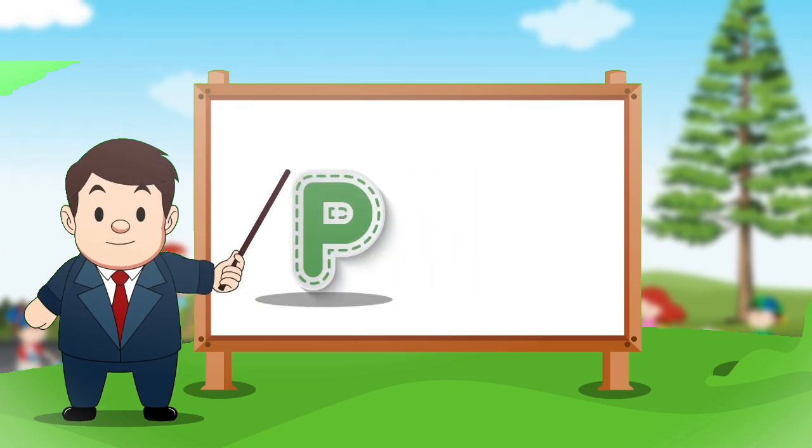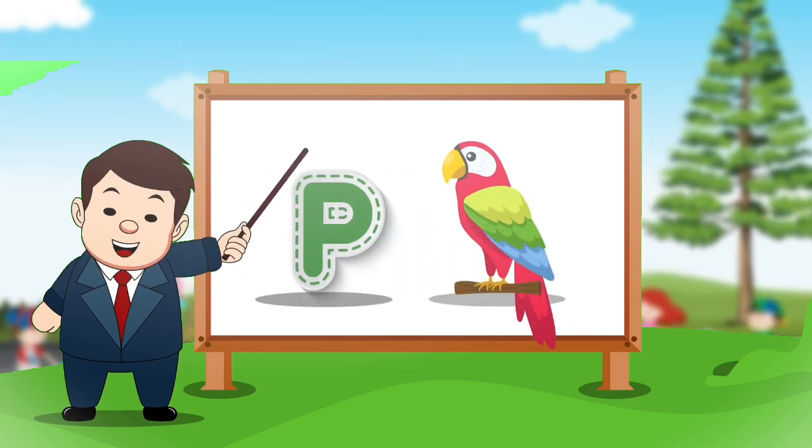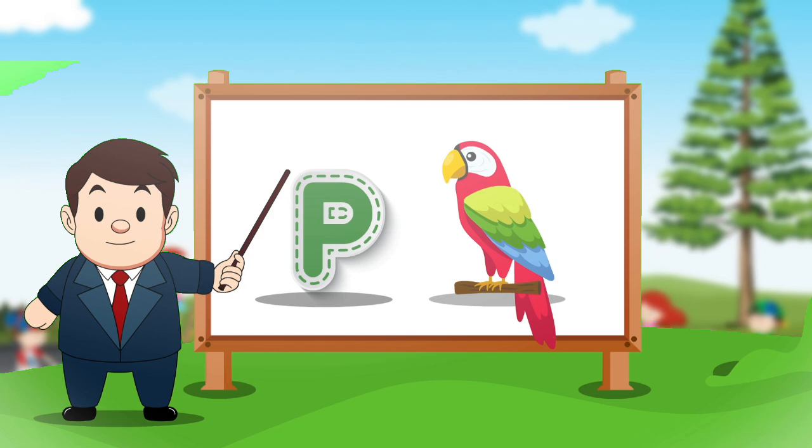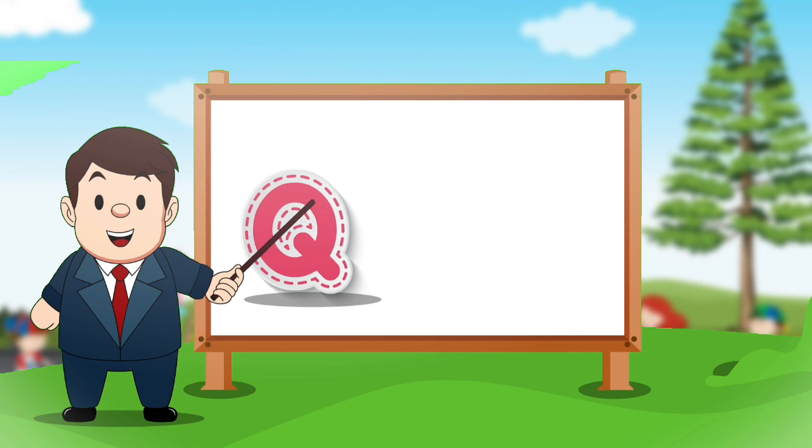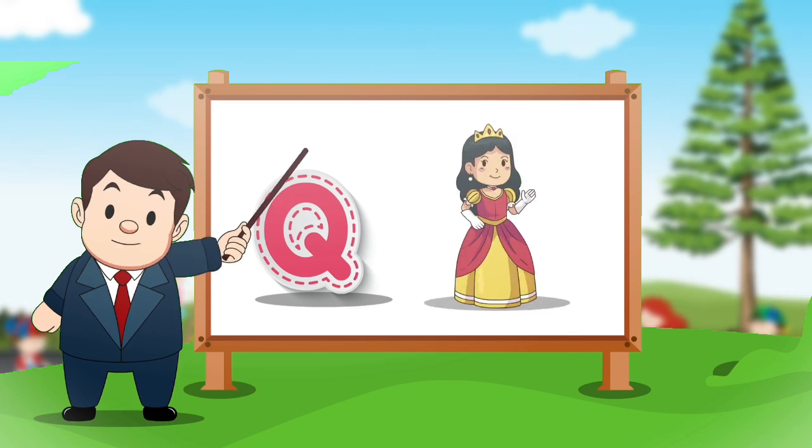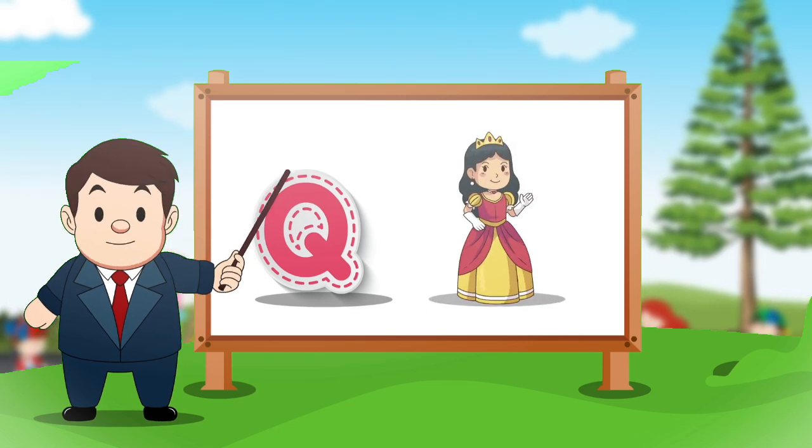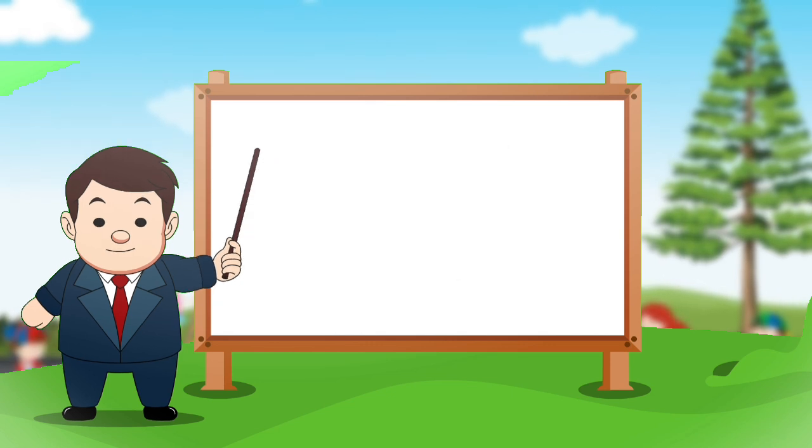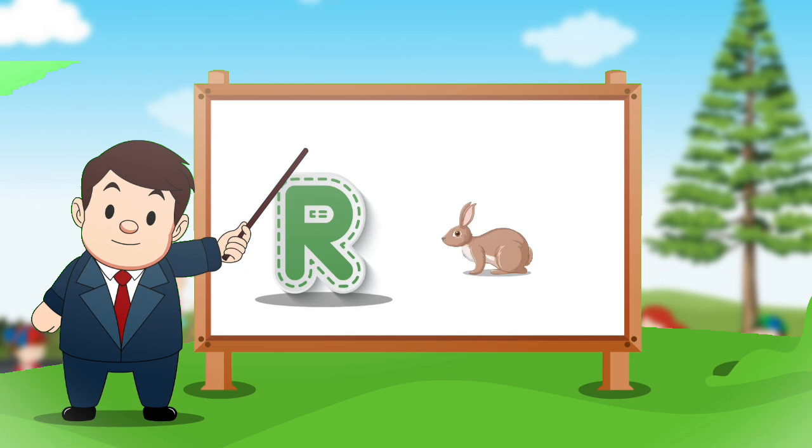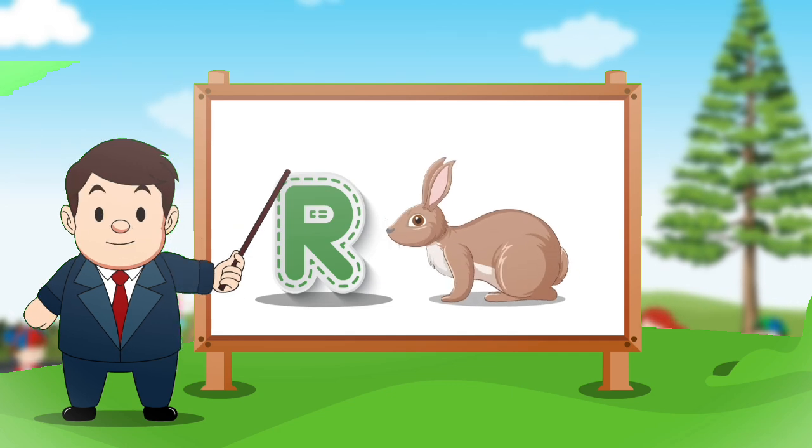P. P for parrot. Q. Q for queen. R. R for rabbit.